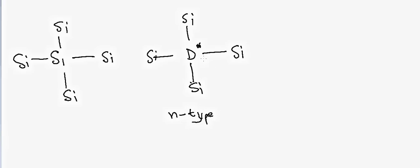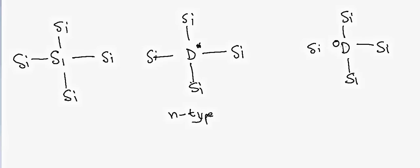In an n-type semiconductor, if we apply voltage, this electron will be able to travel because it is free, and conduction will occur. Similarly, we can also create a hole in the semiconductor. Instead of doping with something that has five electrons in the outer orbital, we dope with something that has three electrons. It will form bonds on three sides but not the fourth, leaving a hole that always wants an electron. This is called a p-type semiconductor, and electrons can jump from one hole to another to conduct electricity.